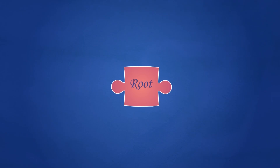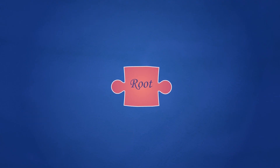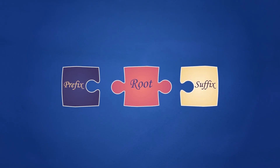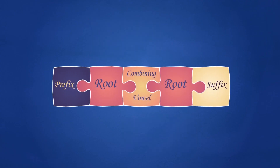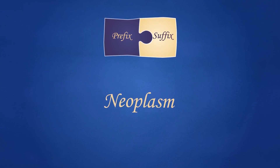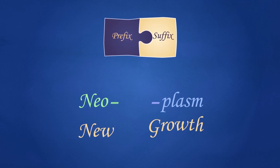Roots are the element that provide the core meaning of the word, and they usually identify a body part or an action. You can expand a root and change its meaning by adding a prefix before the word, or a suffix after the word. Roots appear anywhere in the term. Medical terms have one or more roots, or even none at all — as in the term 'neoplasm', where 'neo' is a prefix meaning 'new', and 'plasm' is a suffix meaning 'growth', and the term means 'new growth'.